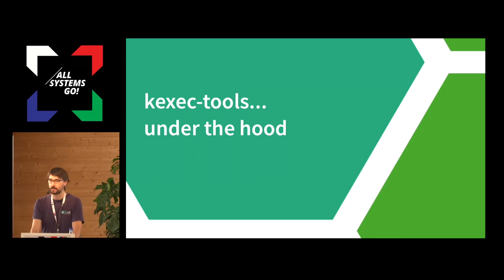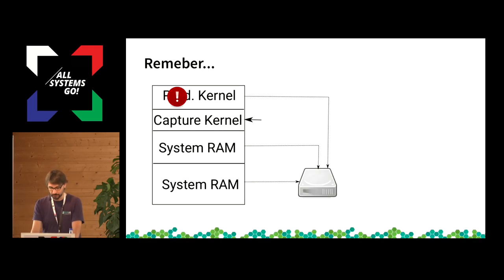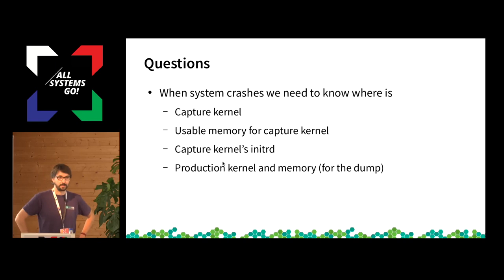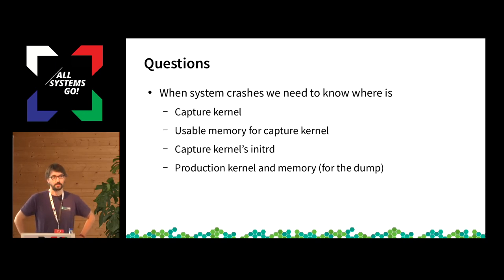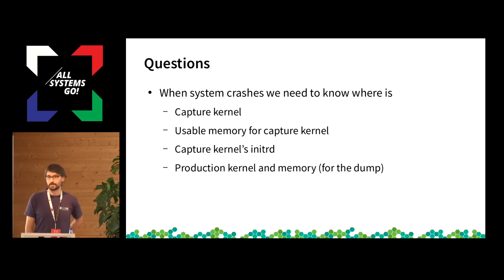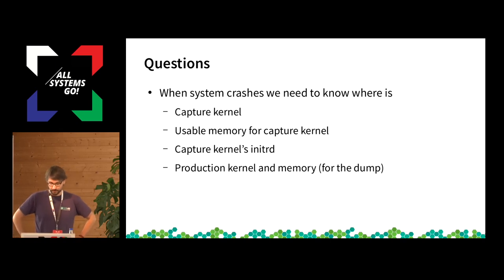Let's look under the hood at how kexec-tools actually works. The capture kernel will make a dump file from the production system. So it needs to know where the actual capture kernel is so it can load it when the production system crashes. It must know where usable memory is for the capture kernel, since we can't use the production system's memory — we'd overwrite the hints we need. And it needs to know where the production kernel in memory can be found.